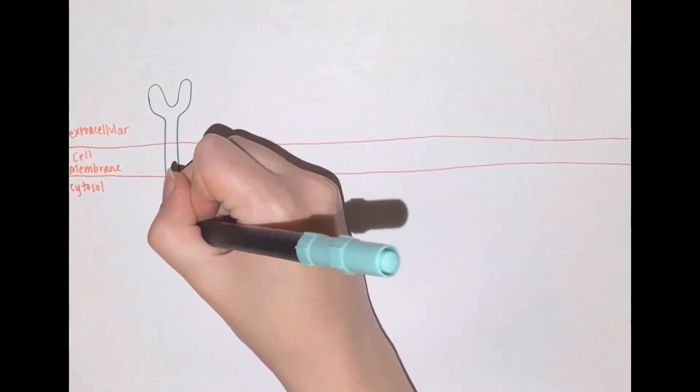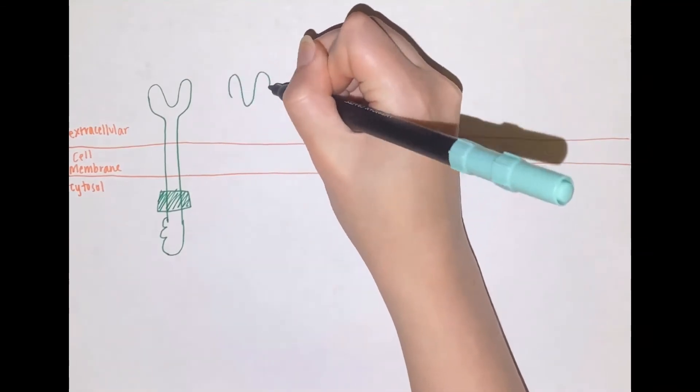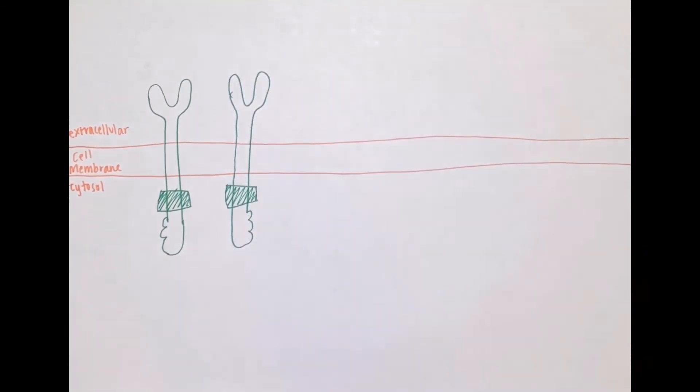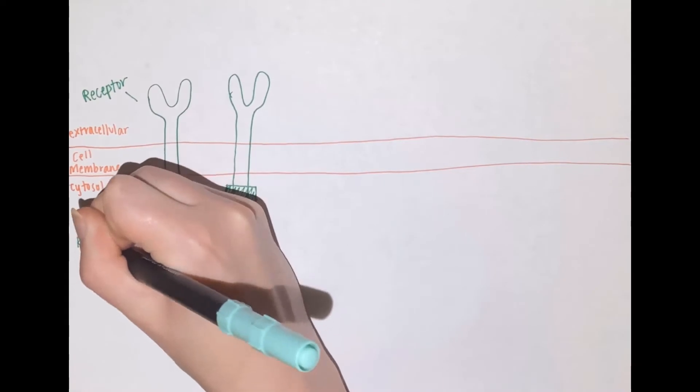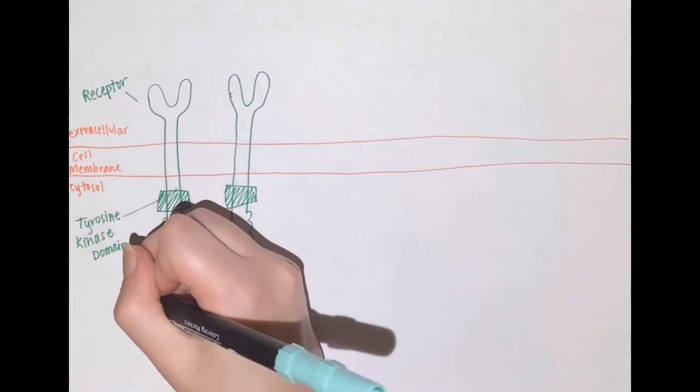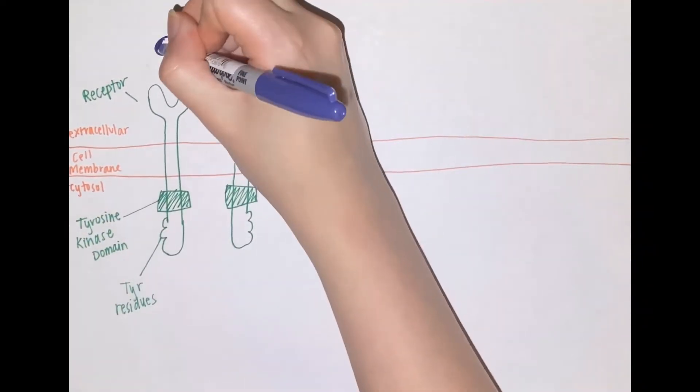Receptor tyrosine kinases, or RTKs, are a type of tyrosine kinase that are transmembrane proteins with its receptor domain in the extracellular side of the cell and its kinase domain on the cytosolic side.